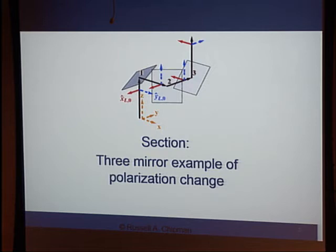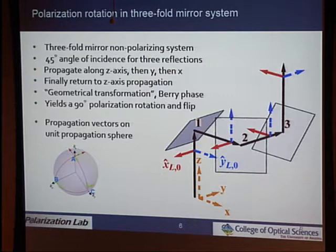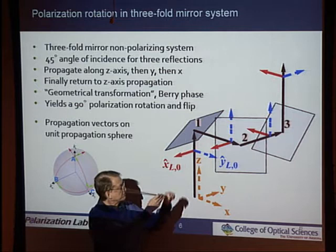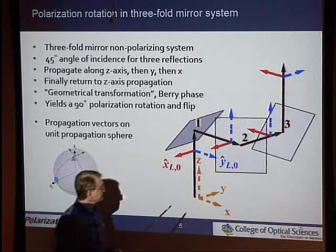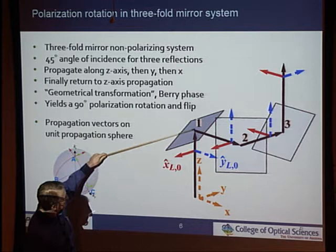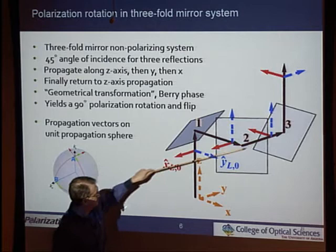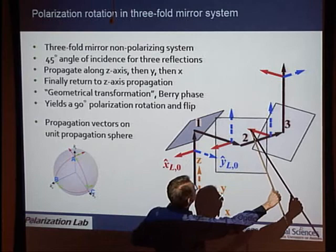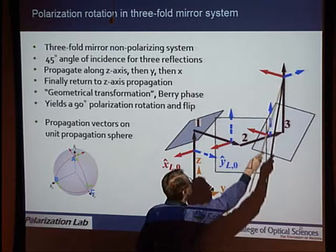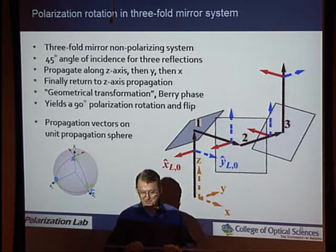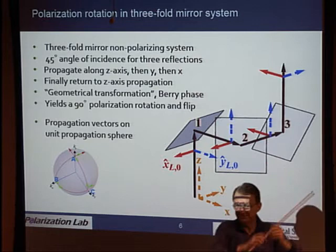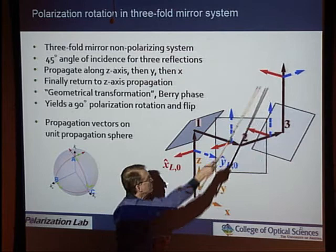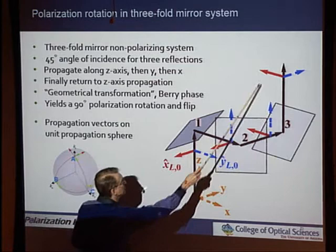Consider this example with three mirrors and the polarization change that results. Light propagates in the z-direction, reflects into the y-direction, then reflects into the x-direction, and then reflects back into the z-direction with mirror one, mirror two, and mirror three. If we come in with x-polarization, it's s-polarized light; it reflects. When we propagate into the x-direction, the light flips to the minus z-axis. It will be s-polarized again, and when it exits it will have rotated by 90 degrees.